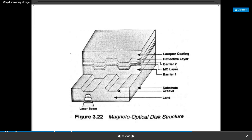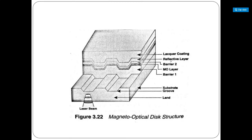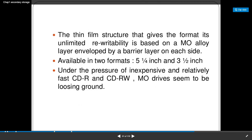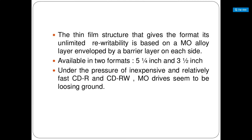The MO layer is mounted between barrier 1 and barrier 2, and above that is the reflective layer. Based on the information present, it is reflected back. There is also a lacquer coating for the disk. The laser beam is shown passing through the land and groove, similar to a magnetic disk, with the substrate being the small material of which the magneto-optical disk is made.